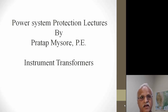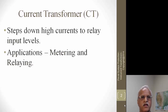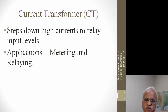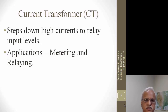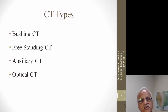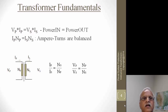A current transformer essentially steps down the high current to the relay input level. Similarly, a voltage transformer steps down the primary voltage to a manageable level of 66 or 150 volts, as discussed in the lecture on fundamentals. Applications of current transformers include metering and relaying purposes. There are different types: bushing CT, freestanding, auxiliary, and optical CT.